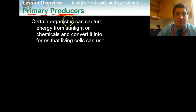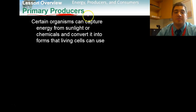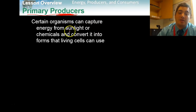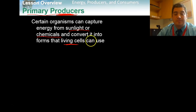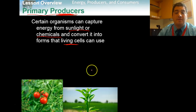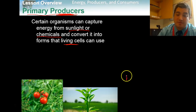The first level of energy we're going to talk about is called primary producers. They're called producers because they're going to make or produce energy. Certain organisms can capture energy from the Sun, or they can get energy from chemicals found on Earth, and convert it into energy that all living things can use. There are a couple of things that are primary producers. The first one is plants — plants are our first primary producer.